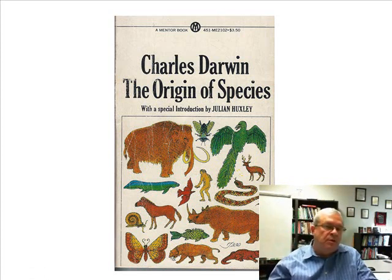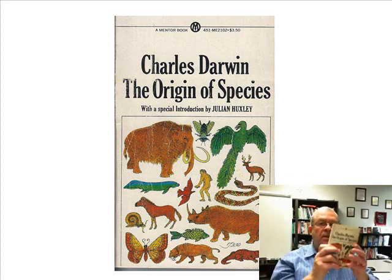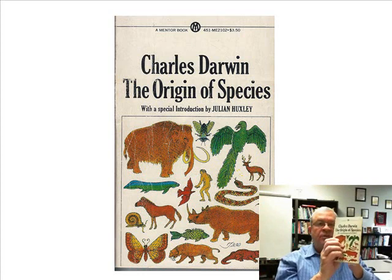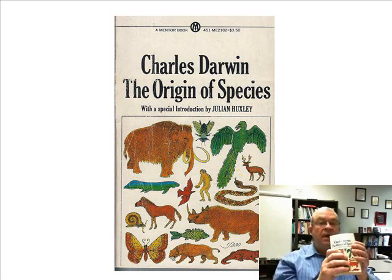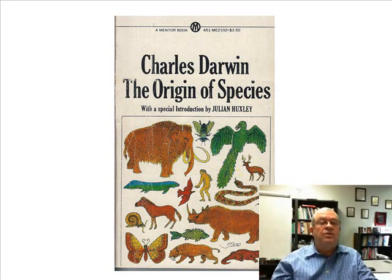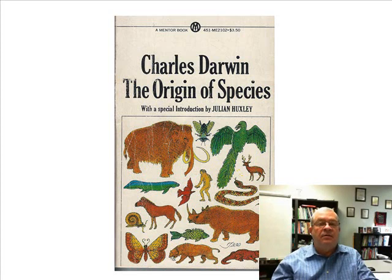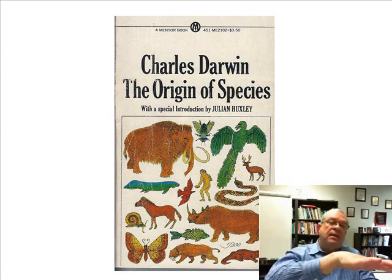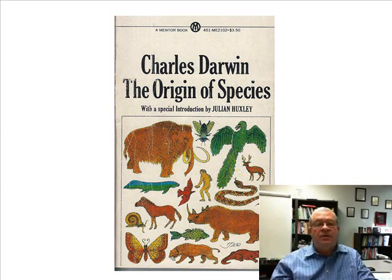Now, were both of those Mr. Darwin's original ideas? No. Which one was his original idea? The second one — natural selection. So this book is about natural selection, but it's also about descent with modification. And even though that wasn't Mr. Darwin's original idea, what did this book accomplish? Well, it basically wiped out the prevailing idea of the time, which was the exact opposite of descent with modification.